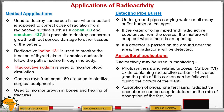Then we have the absorption of phosphate fertilizers. Radioactive phosphorus can be used to determine the rate of absorption of the fertilizer. The radioactive phosphorus is combined with the fertilizer, and it can be monitored as it moves, so we can determine the rate of absorption of the fertilizer.